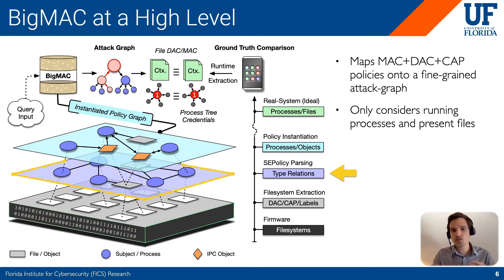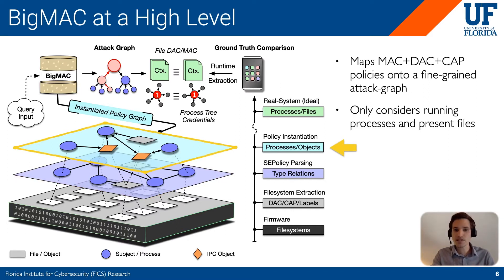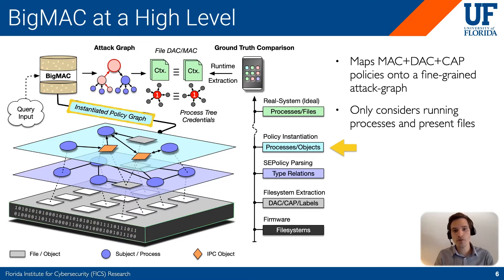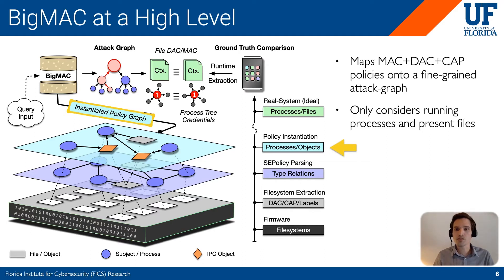But this is too coarse for us — we need to get more fine-grained. So we start to instantiate the graph into more recognizable objects like processes, files, and IPCs. From here, we fully instantiate this policy graph and inject it into our Big Mac query engine, which allows us to generate attack graphs and understand how an attacker would privilege escalate between different components.